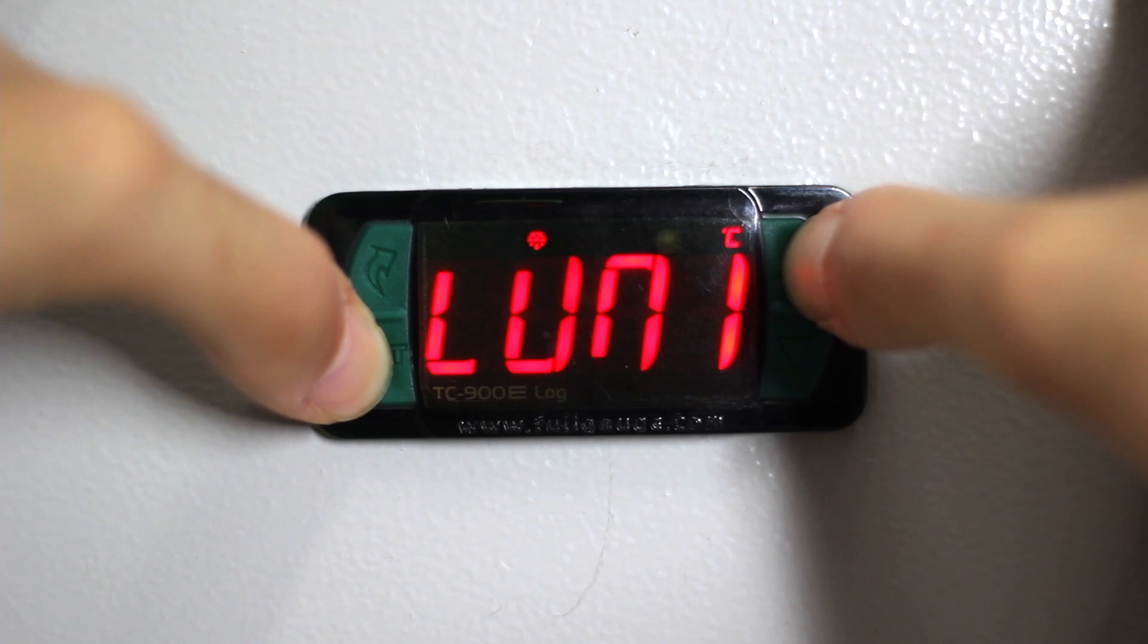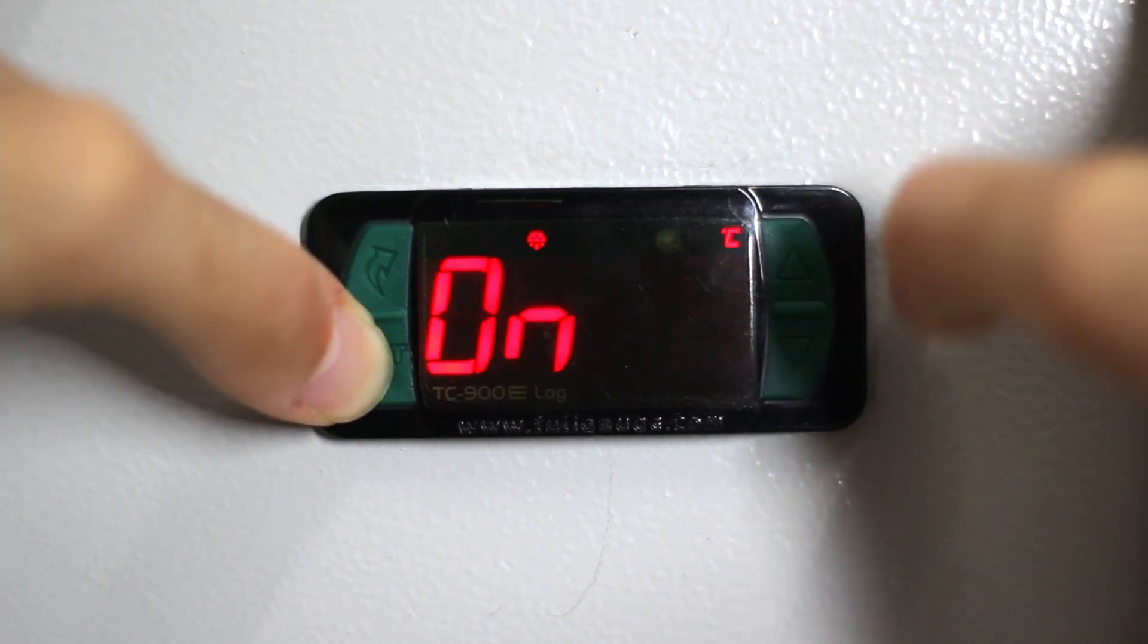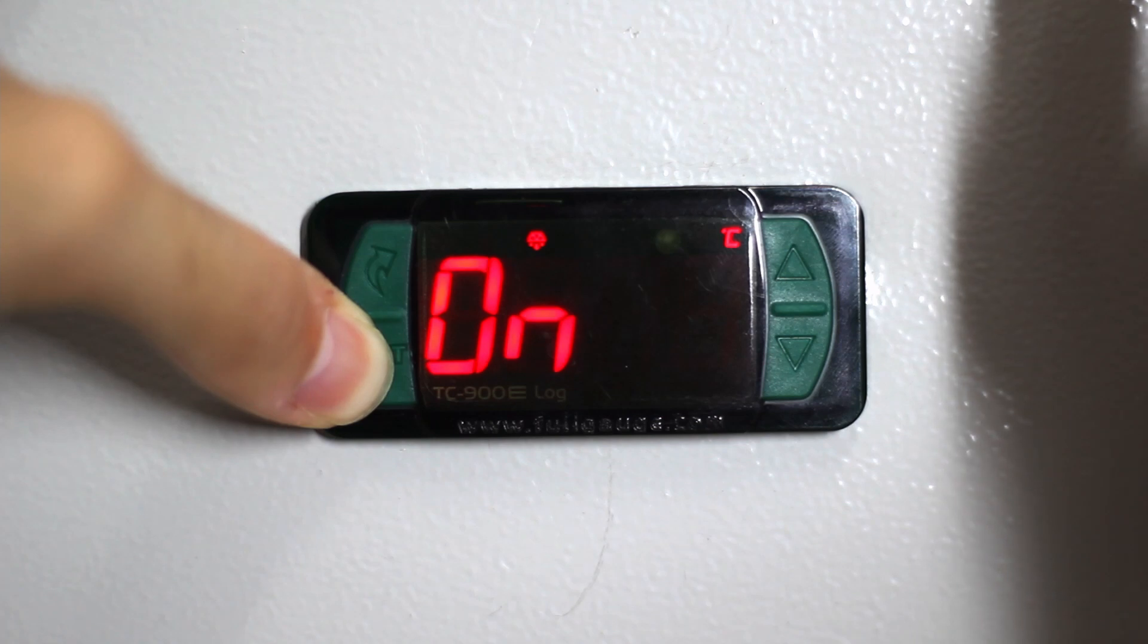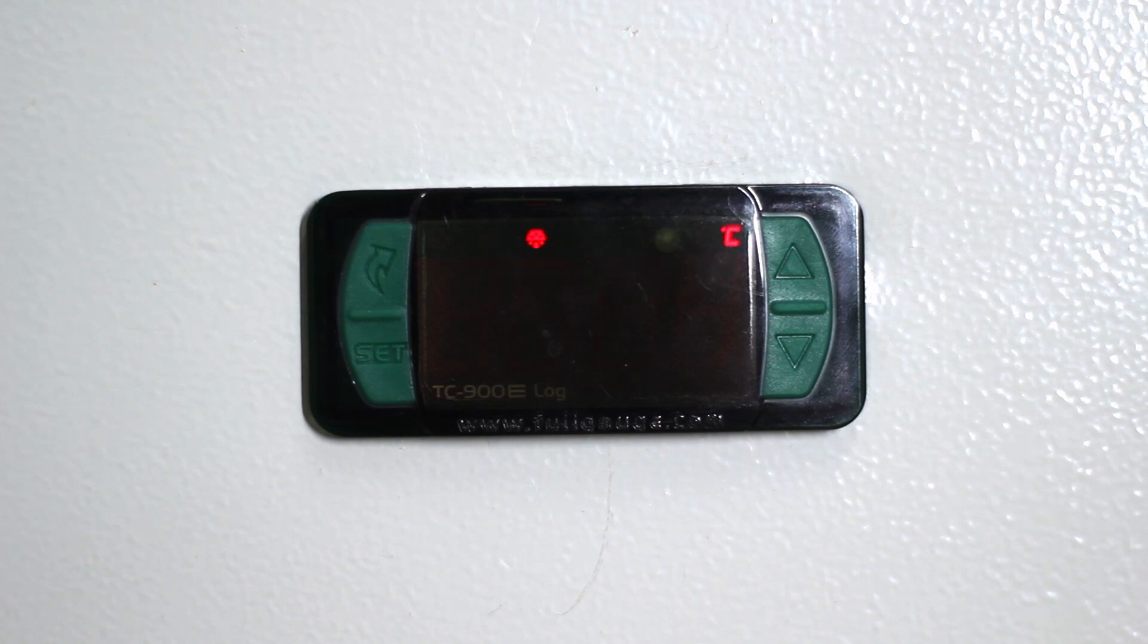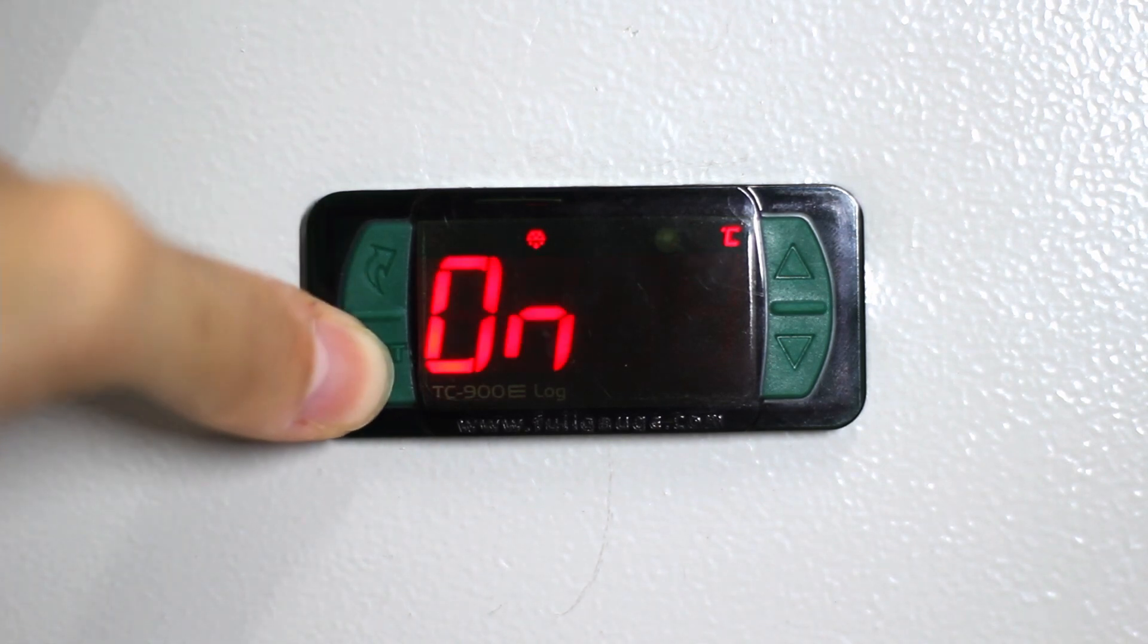At this moment, lights must be on, so the controller sensor will understand the luminosity of the ambient. Now find the ON option on the display and press SET to register the amount of light when in normal operation.